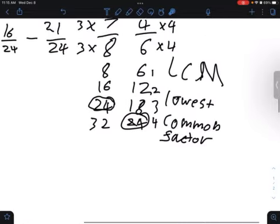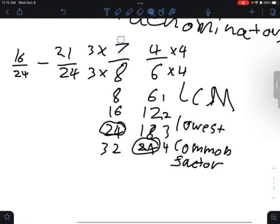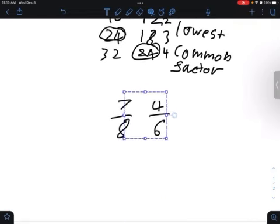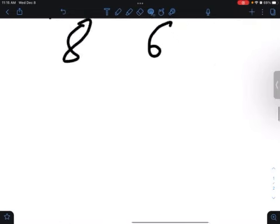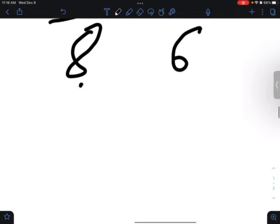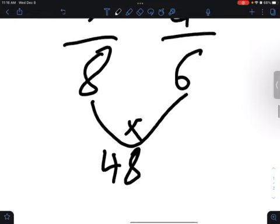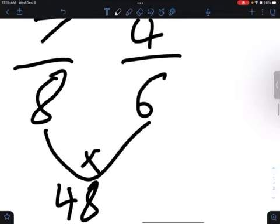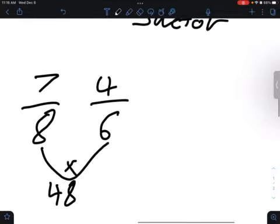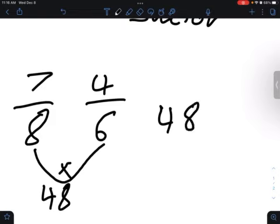Another way to do this is to first multiply these two denominators together, which would be 48. And then we put it as 48.